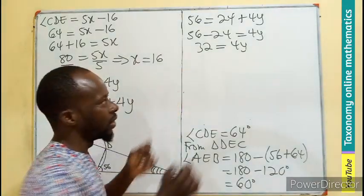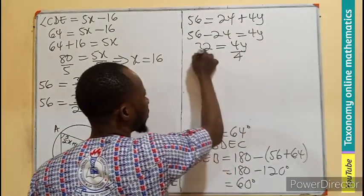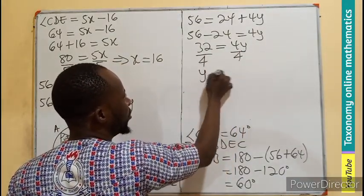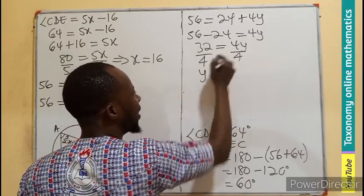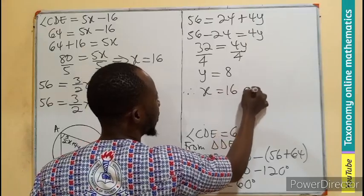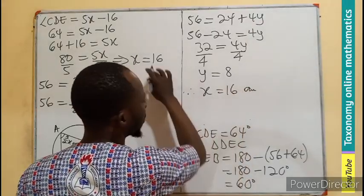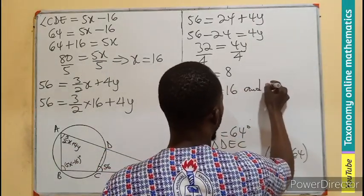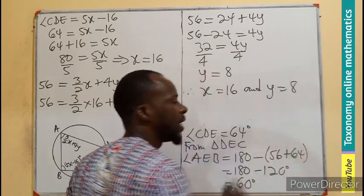You can agree that we need the y. So let's divide by 4. Therefore, y will be 8. Therefore, x is equal to 16 and your y is equal to 8.